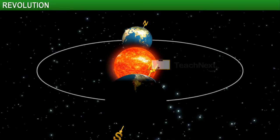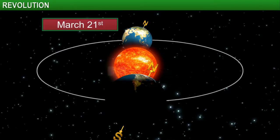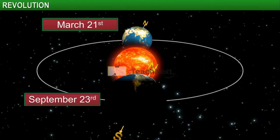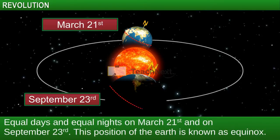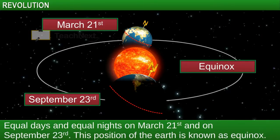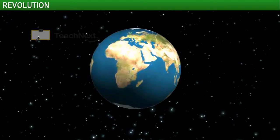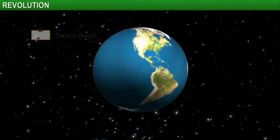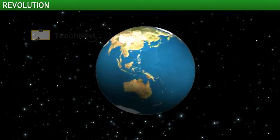During its orbit, there are times when neither of the Earth's poles is inclined towards the Sun. On two occasions — March 21st and September 23rd — sunlight falls directly on the equator. This position of the Earth is called an equinox. On these days, the day and night are of equal duration on Earth.